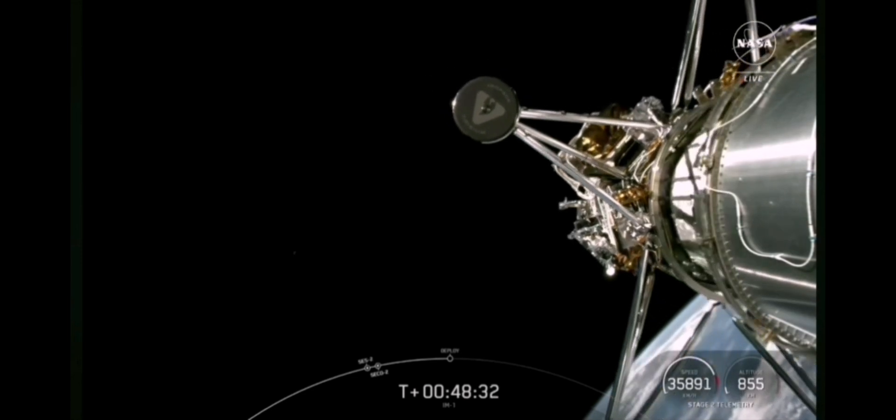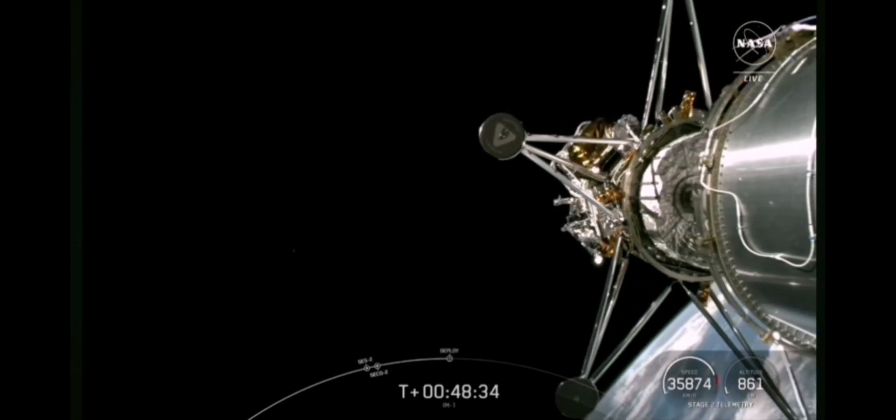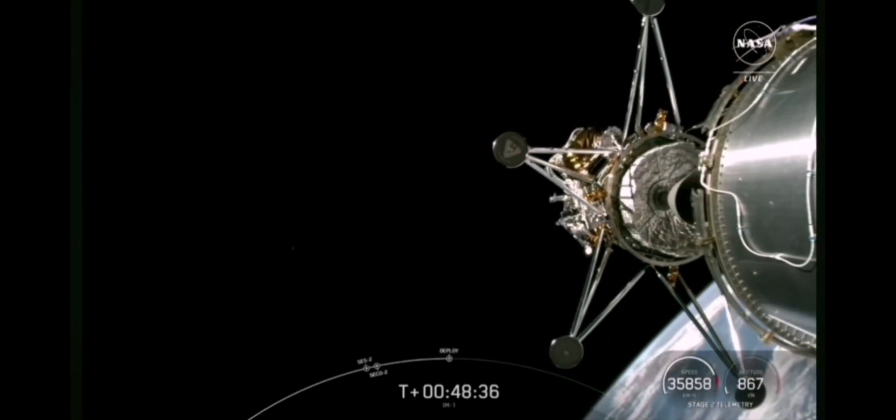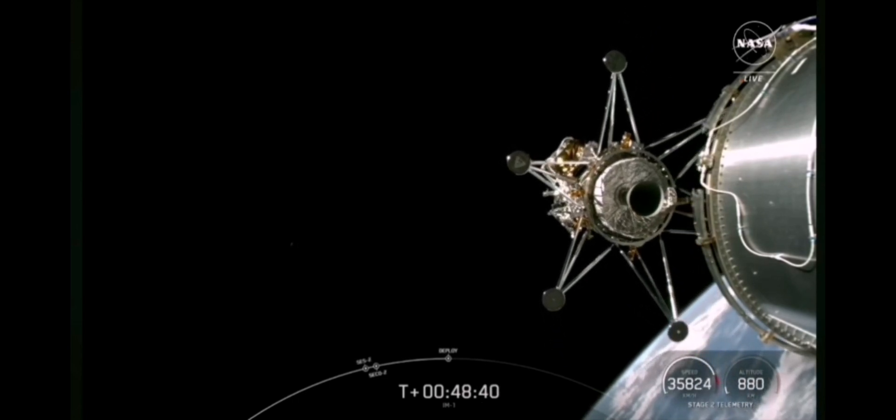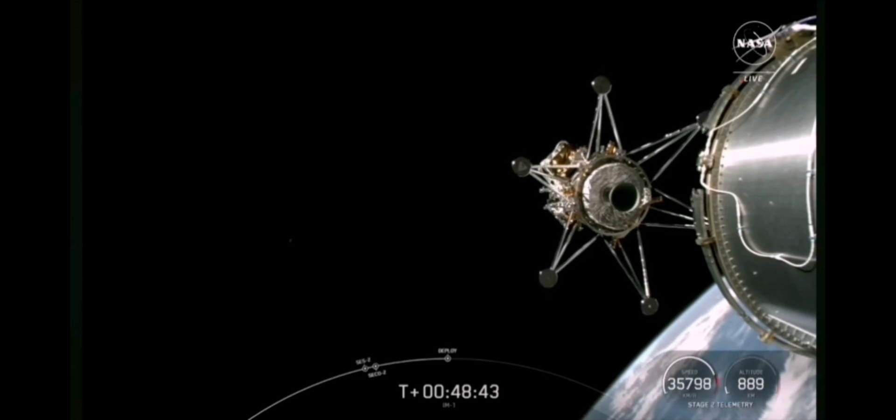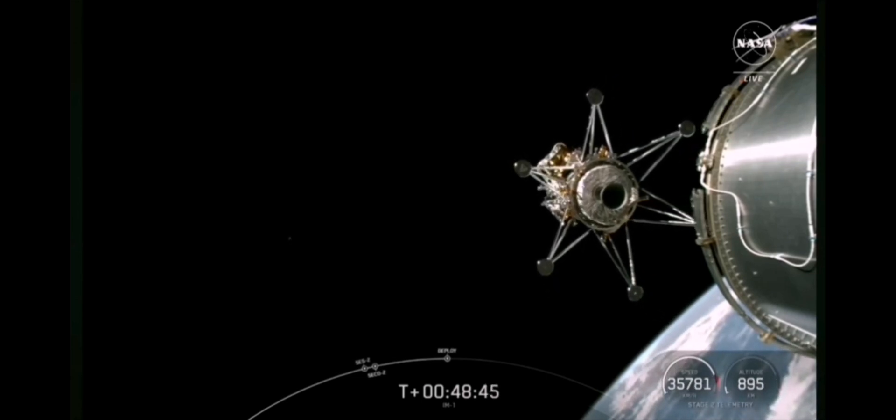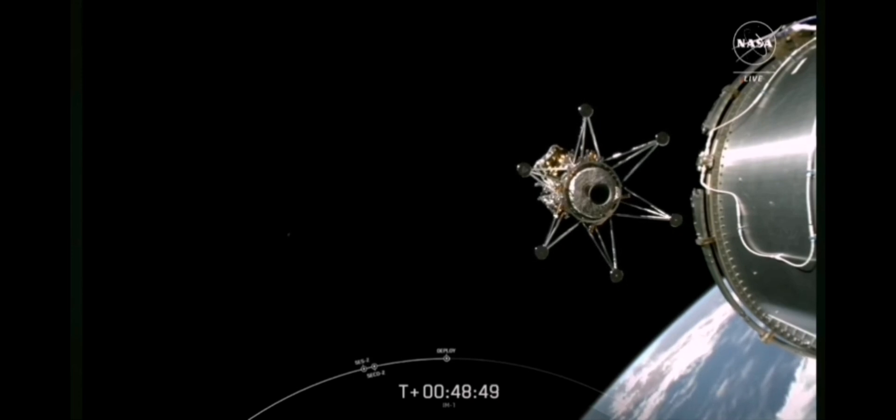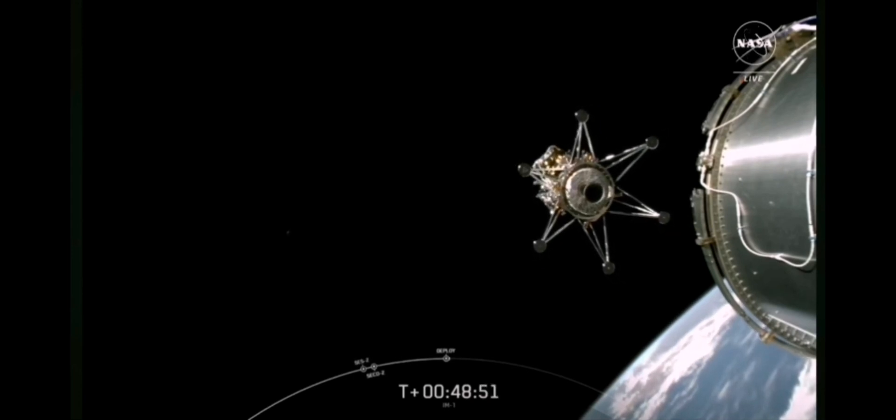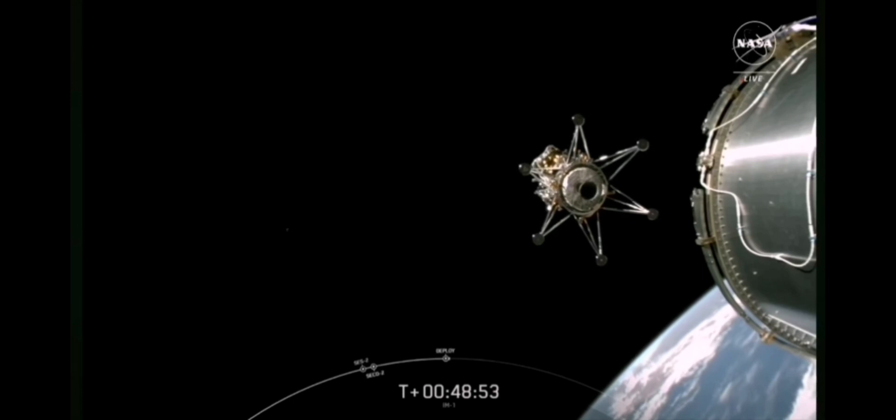IM-1, Odysseus lunar lander separation confirmed. What an incredible sight to see, the IM-1 Nova-Sea lunar lander drifting away from Falcon 9's second stage, confirming spacecraft separation.